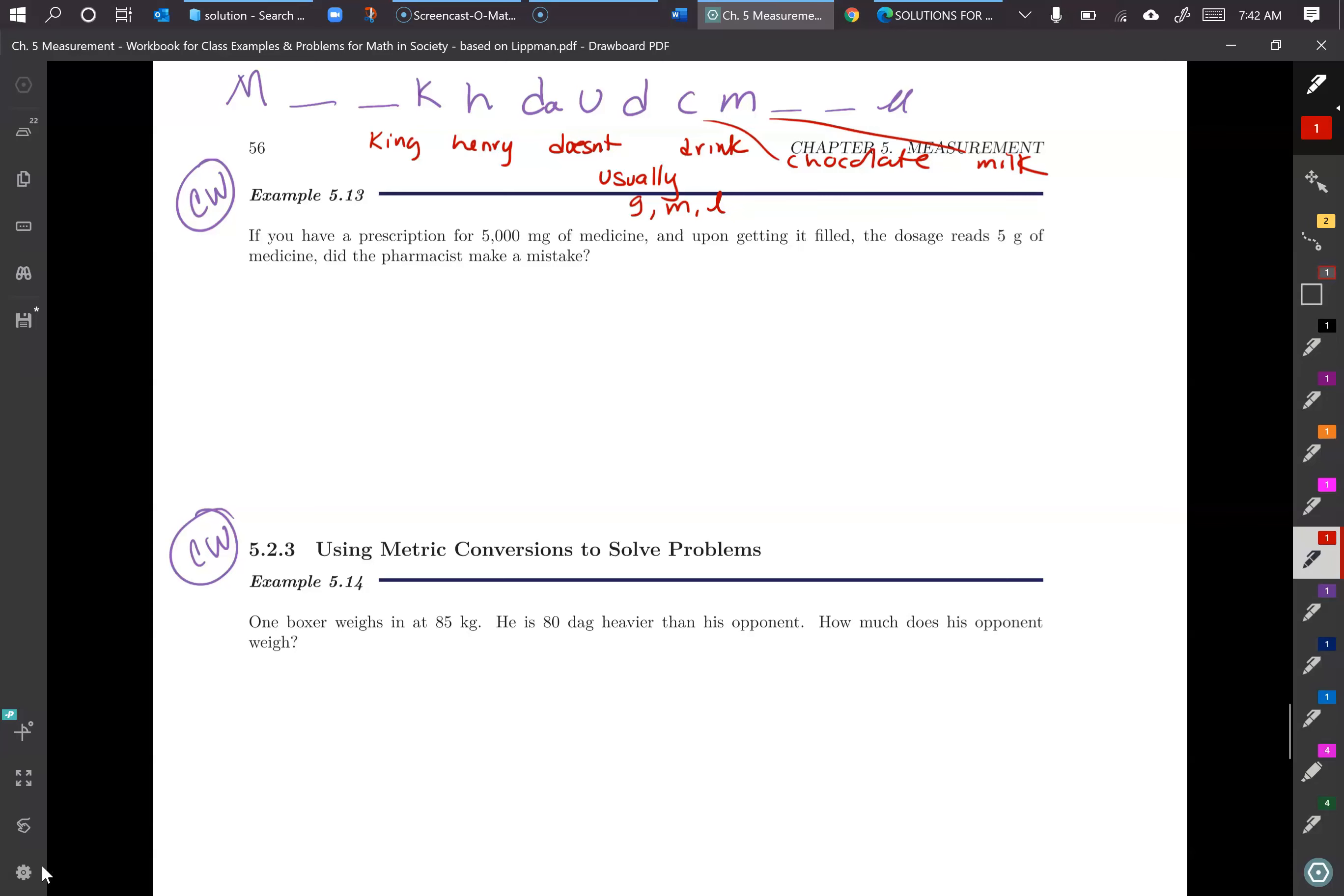So these are set up as word problems, but basically you're just converting and seeing if this is correct. So you're comparing 5,000 milligrams of medicine that you have a prescription for upon getting it filled. The dosage reads 5 grams of medicine. Are those equivalent or did the pharmacist make a mistake? So what you would do here for the classwork is you are going to convert milligrams to grams and see if it lines up. On this next one, a little more involved, you have one boxer weighs in at 85 kilograms. He's 80 decagrams heavier than his opponent. How much does his opponent weigh? So I think the easiest thing is to try to get it all into kilograms. So convert 80 decagrams to kilograms and then subtract.